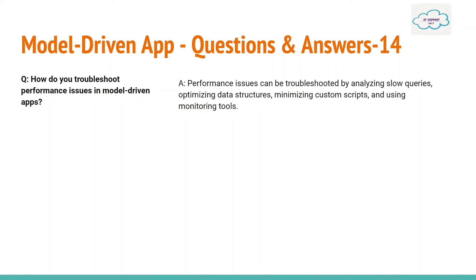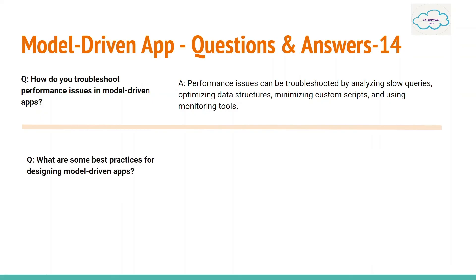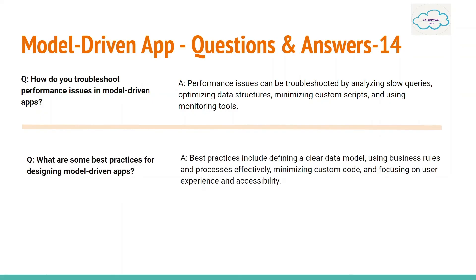Next question: How do you troubleshoot performance issues in the model-driven app? Performance issues can be troubleshot by analyzing slow queries, optimizing the data structure, minimizing custom scripts, and using monitoring tools. Best practices include defining a clear data model, using business rules and processes effectively, minimizing custom code, and focusing on user experience and accessibility.